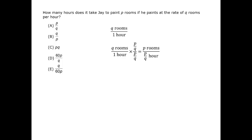We can check that it makes sense by considering a case. If J paints at a rate of 3 rooms per hour, and he's painting 9 rooms, then Q equals 3 and P equals 9, and it will take him 9 over 3 equals 3 hours to paint 9 rooms. It checks out.